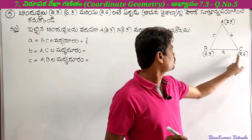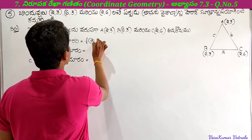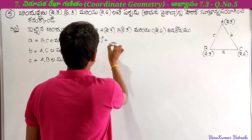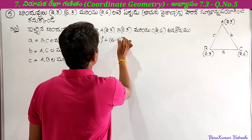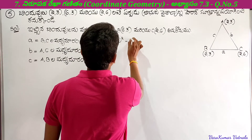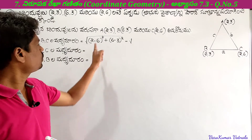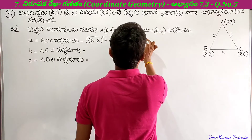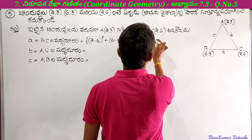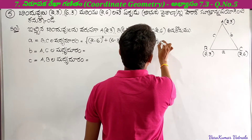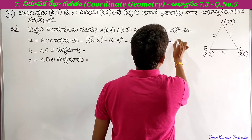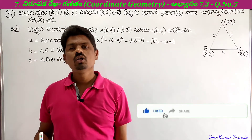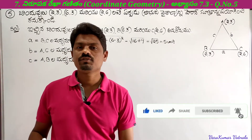Applying the formula for side a: square root of (2 minus 6) whole square plus (6 minus 3) whole square. So 2 minus 6 gives minus 4, minus 4 whole square gives 16. Plus 6 minus 3 gives 3, 3 square gives 9. So square root of 16 plus 9, that is square root of 25, which equals 5 units.